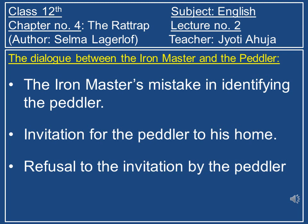The peddler was invited by the Ironmaster to his home because the Ironmaster thought him his acquaintance and could not tolerate seeing him in rags. However, the peddler knew his real identity and could not believe the invitation. He thought going to the Ironmaster's house would be like throwing himself voluntarily into the lion's den. He only wanted to sleep in the forge and then sneak away unnoticed. So he got embarrassed by the invitation and refused it smartly, not wanting to put himself in further trouble.